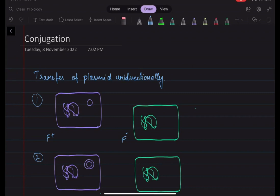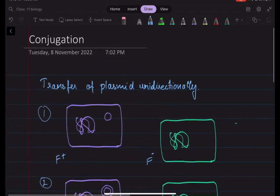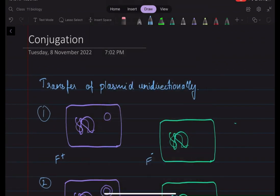Hey guys, this is Geetanjali and in this video we will be doing conjugation. So conjugation is another type of gene transfer, like how we saw two processes previously: transformation and transduction.